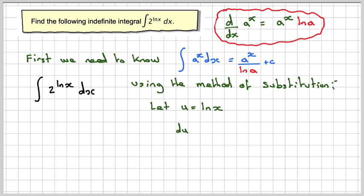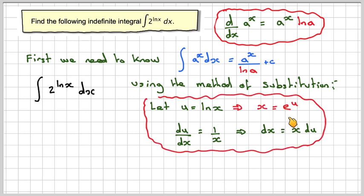We differentiate that to get du/dx equals 1 over x, which means that dx will become x du. We've got an extra x here, so if we rearrange, x equals e to the u.